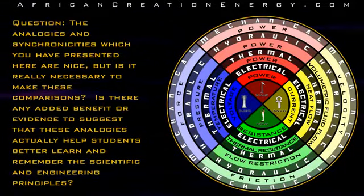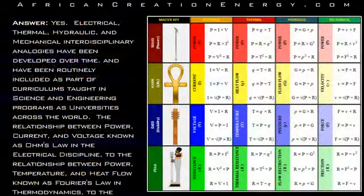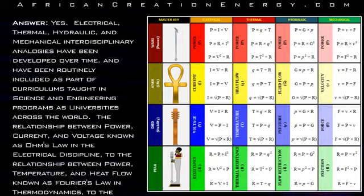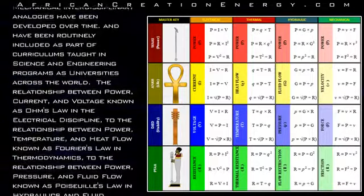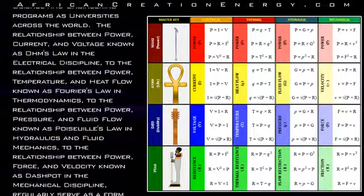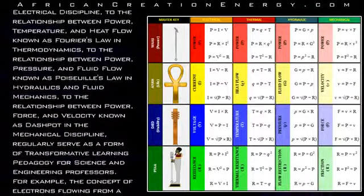Question: The analogies and synchronicities presented here are nice, but is it really necessary to make these comparisons? Is there any added benefit or evidence to suggest that these analogies actually help students better learn and remember the scientific and engineering principles? Answer: Yes. Electrical, thermal, hydraulic, and mechanical interdisciplinary analogies have been developed over time and have been routinely included as part of curriculums taught in science and engineering programs at universities across the world. The relationship between power, current, and voltage — known as Ohm's Law in the electrical discipline — to the relationship between power, temperature, and heat flow — known as Fourier's Law in thermodynamics — to the relationship between power, pressure, and fluid flow — known as Poiseuille's Law in hydraulics and fluid mechanics — to the relationship between power, force, and velocity — known as Dashpot in the mechanical discipline — regularly serve as a form of transformative learning pedagogy for science and engineering professors.